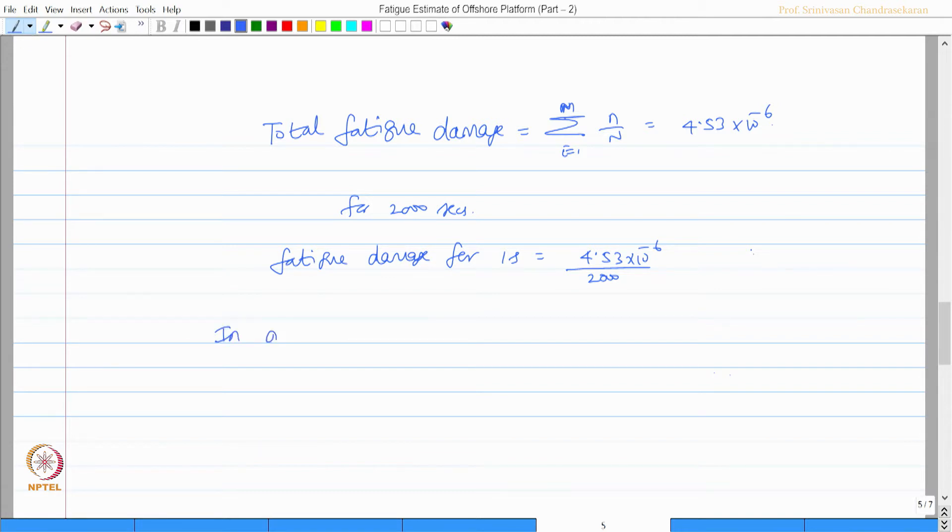In a year the damage will be equivalent to 4.53 into 10 power minus 6 by 2000. This is for 1 second, so 60 times 60 times 60 times 24 and 365 which comes to 0.0714.